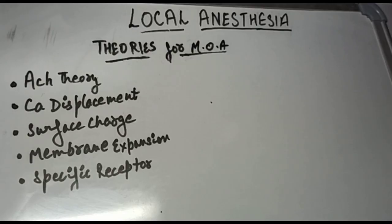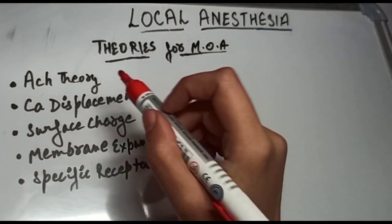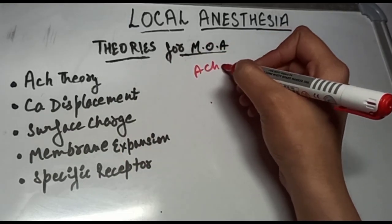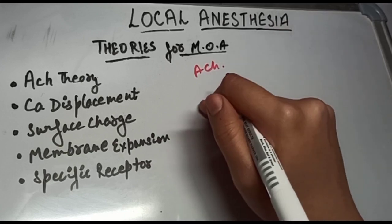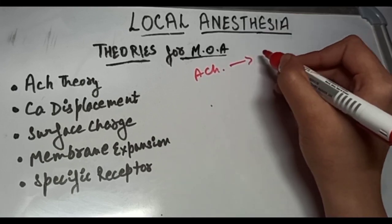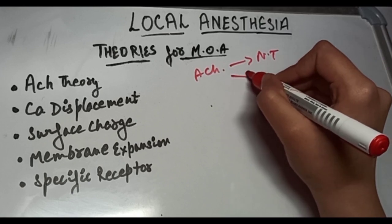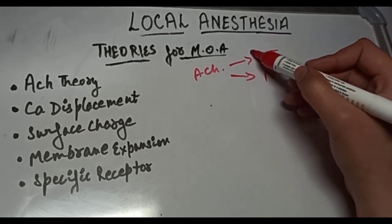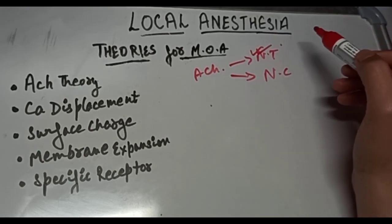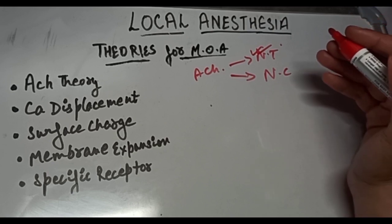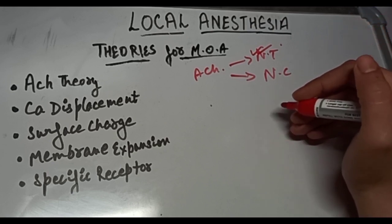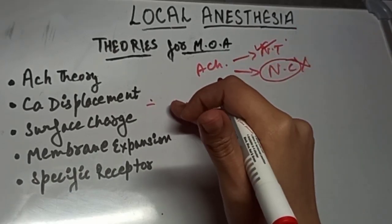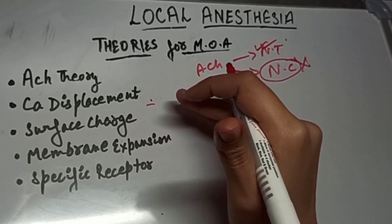We will now see the various theories for the mechanism of action of LA. First is the acetylcholine theory. According to this theory, LA interferes with the action of acetylcholine and leads to conduction blockade. Acetylcholine is a neurotransmitter at the synapse but there is no evidence showing that acetylcholine is involved in neural transmission throughout the neuron, so this theory cannot be accepted.